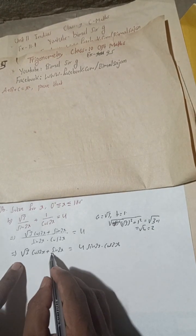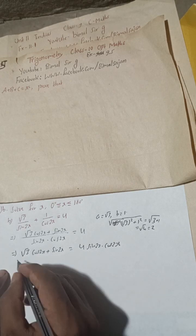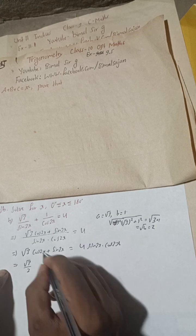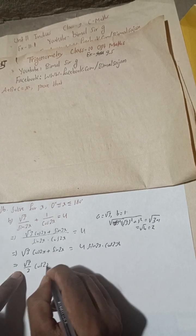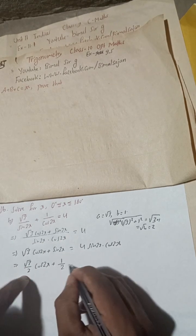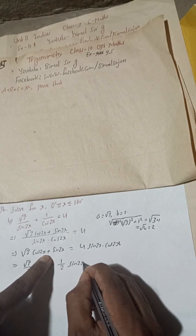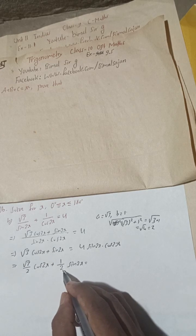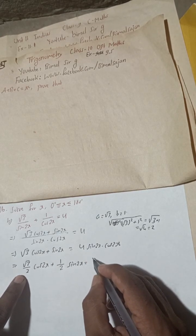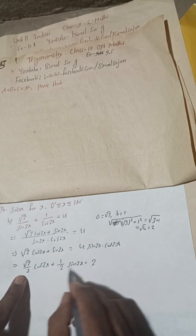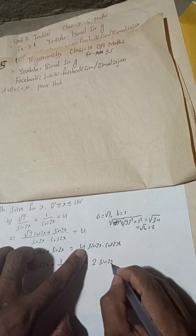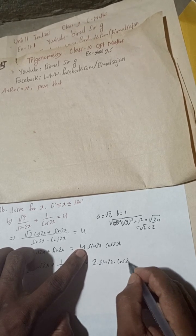Taking 2 out, we get root 3 over 2 times cos 2x plus 1 over 2 times sin 2x on the left side. On the right side, taking the 2 out, we have 2 sin 2x cos 2x, which we recognize as sin 4x using the double angle formula.